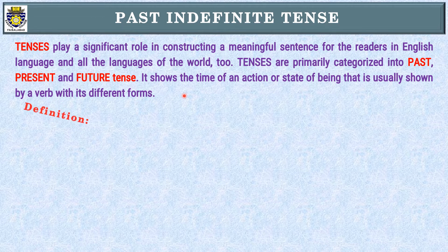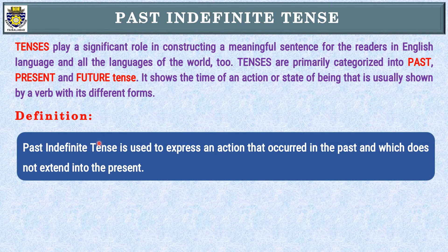We start with its definition. Past indefinite tense is used to express an action that occurred in the past, which does not extend into the present — meaning the action was completed in the past and does not continue to the present moment.